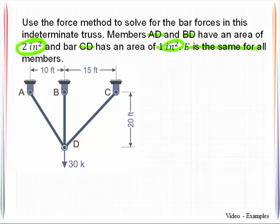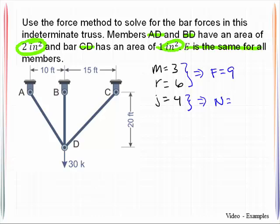We will begin our analysis by making sure that we understand what determinacy we are dealing with. The number of members that we have are three. The number of reactions we have are six because we have three pin supports. The number of joints we have are four. So the total number of unknown forces F is equal to nine and the total number of joints is four. So the equations of equilibrium, two equations per joint times four, gives us eight. Thus we can do the computation: nine minus eight tells us that we are statically indeterminate to the first degree.